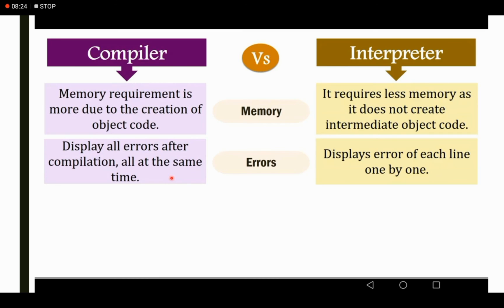Regarding errors: in the compiler, it displays all errors after compilation is complete — all at the same time. Since it compiles the whole program at once, all errors are shown after complete compilation. In the interpreter, errors of each line are displayed one by one, because it compiles the program line by line and displays errors line by line.